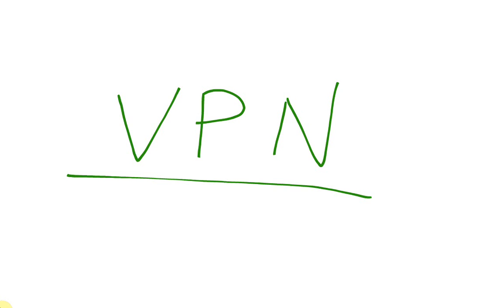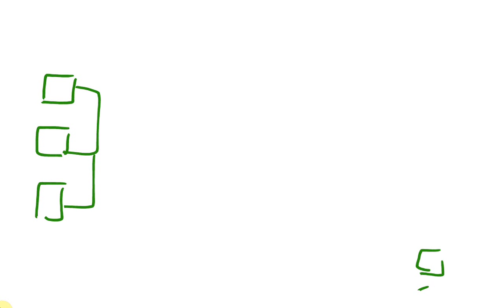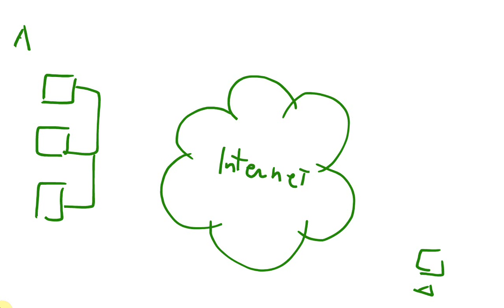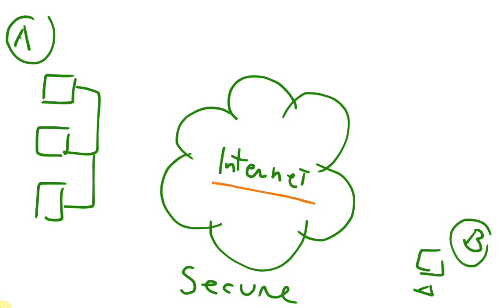First we would be discussing about what we mean by VPN or virtual private networks. You can think of VPN as a technology which extends your local area network, your private network, to remote locations. It uses the internet infrastructure and internet protocols, and it does so in a secure manner.